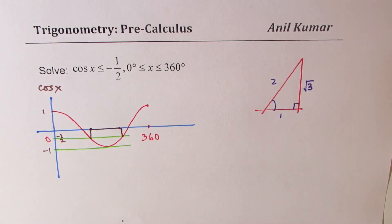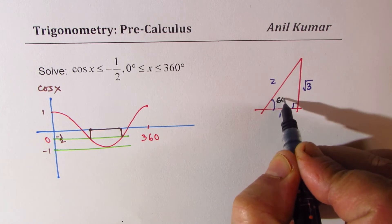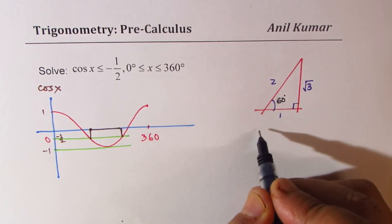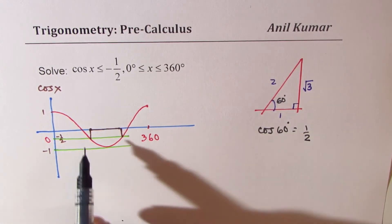For this triangle, which is 30, 60, 90, we know cos 60 is half. So if this is 60 degrees, that is 90. In that case, we know cos of 60 degrees is half.